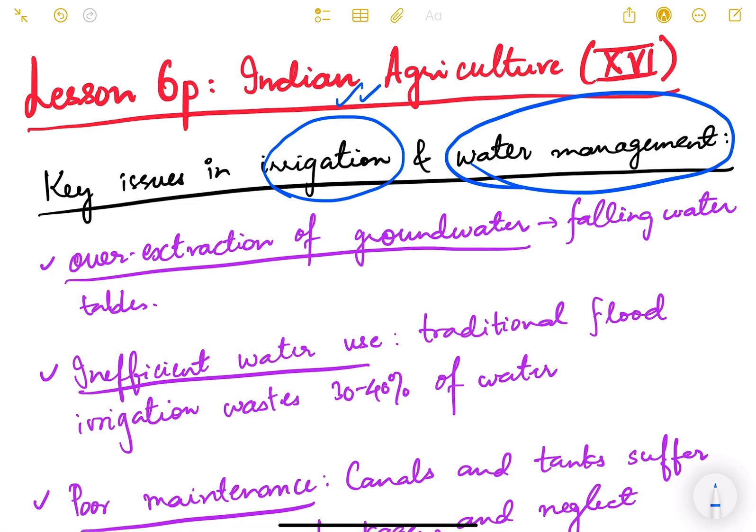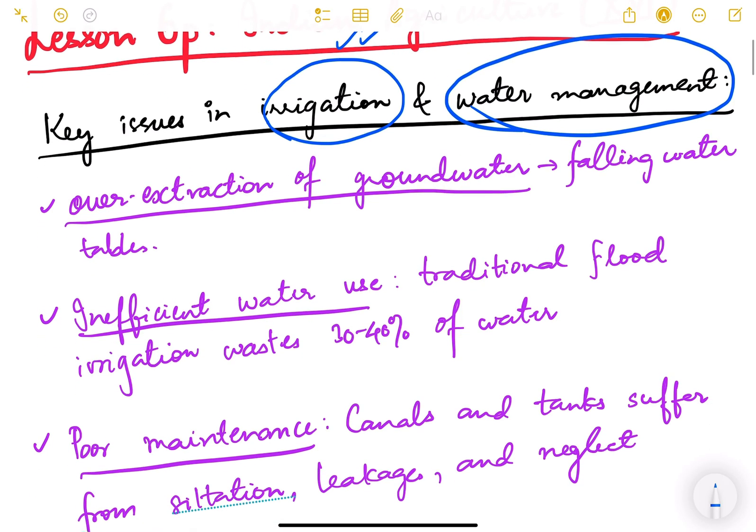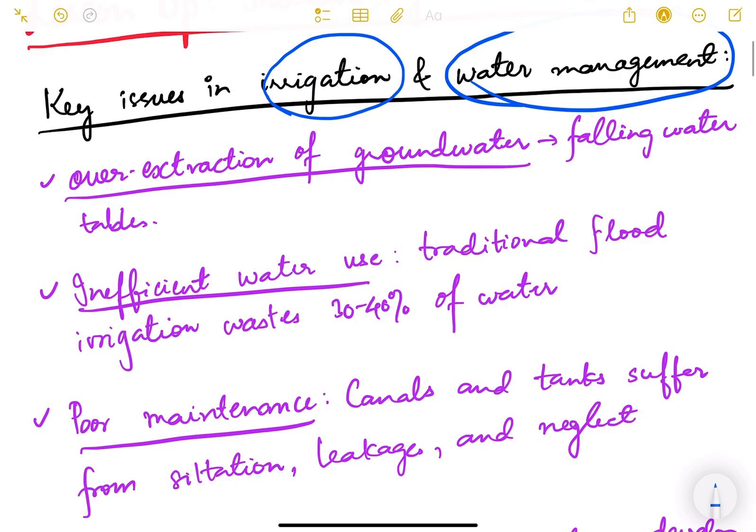Let us first directly focus upon the various issues. The first one is over-extraction of groundwater. This is too much in the news also; you must be reading some news articles regarding groundwater being overly extracted.